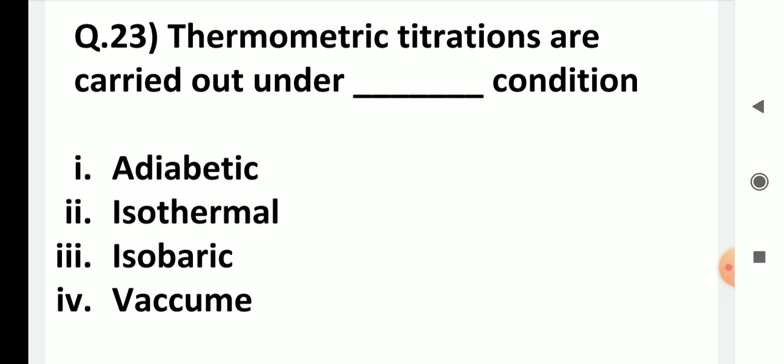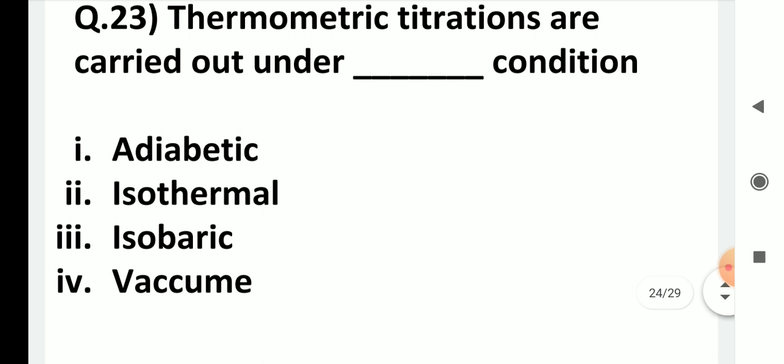Thermometric titrations are carried out under which conditions: adiabatic, isothermal, isobaric, or vacuum? The correct answer is adiabatic. Adiabatic means no heat can enter or leave the system. Since we are measuring temperature as a function of volume of reagent added, we must ensure no heat enters or leaves the system — otherwise results will be incorrect.